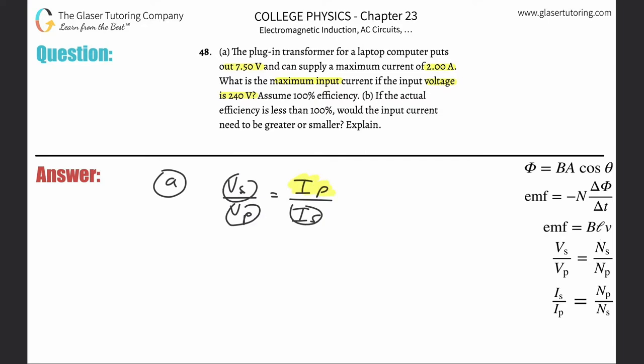The secondary voltage: it told us the input voltage is 240, so that's the primary. Therefore the other voltage is going to be the output, which is 7.5, so that's the secondary.